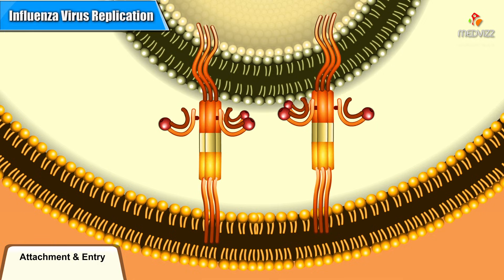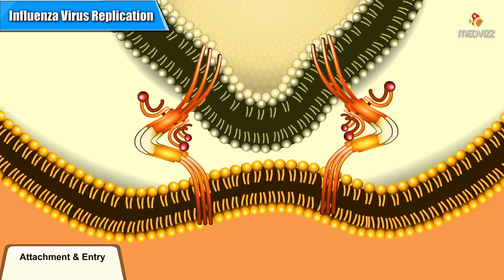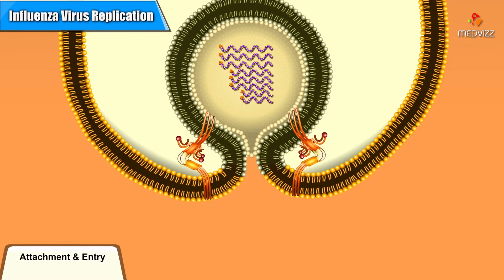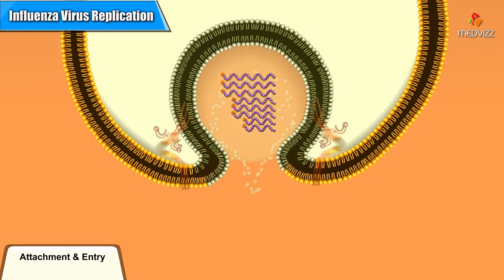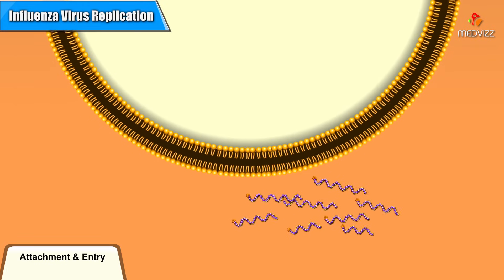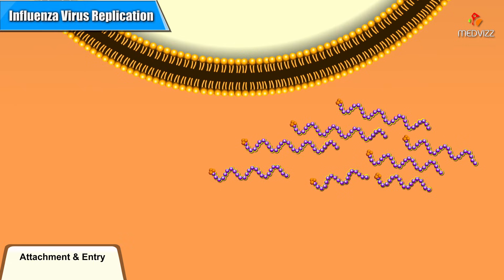The acidity also triggers hemagglutinin to make a structural change and insert itself into the vesicle membrane. In this new form, hemagglutinin stimulates membrane fusion. The RNA genome and associated proteins can then flow freely away from the matrix proteins into the cytoplasm, completing the uncoating process.